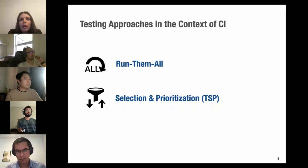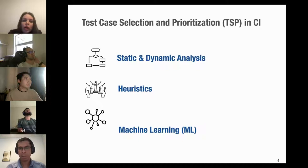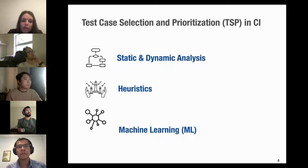We give high priority to test cases that are likely to fail and also have shorter execution times. There are several ways to apply test case prioritization to CI, such as static and dynamic analysis, heuristics, and machine learning. Our work focuses on machine learning techniques — specifically reinforcement learning, or RL.